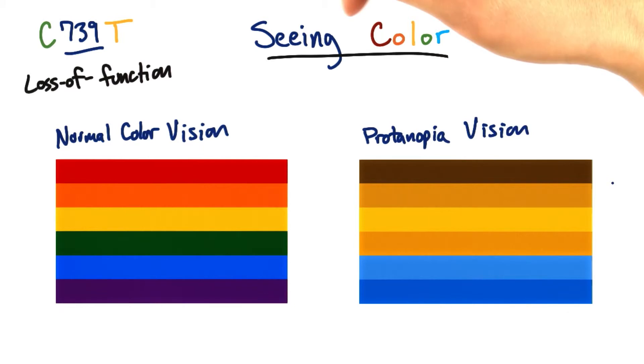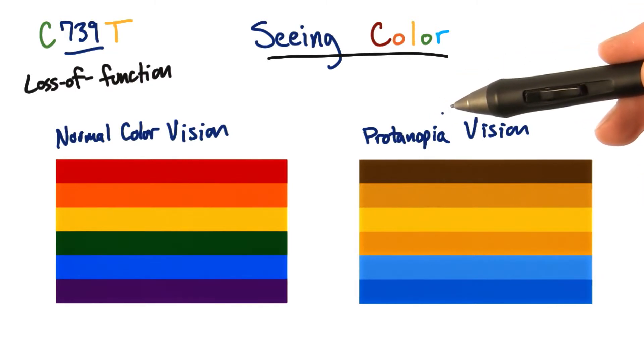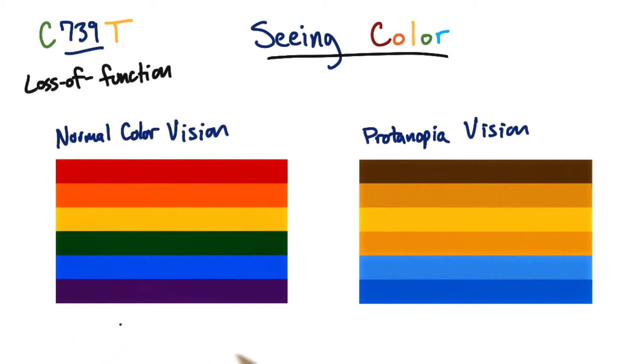But in the case of the C739T allele of the OPN1LW gene, an individual has something called proteinopia, and this is what they would see instead of the six colored rainbow here.